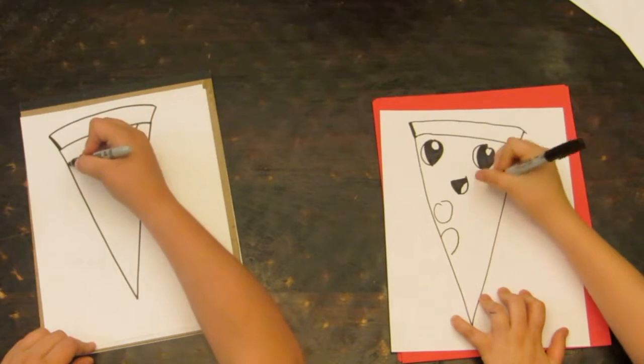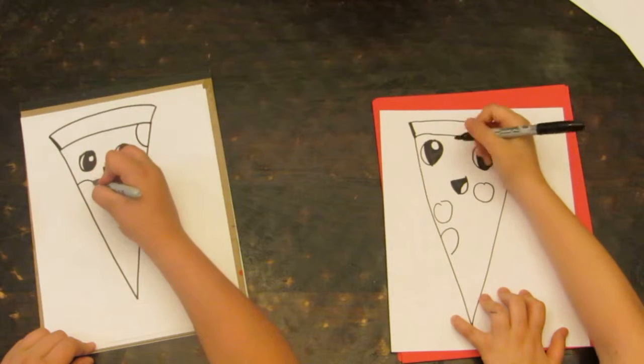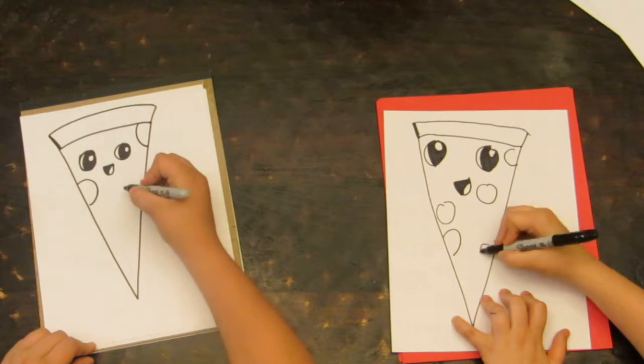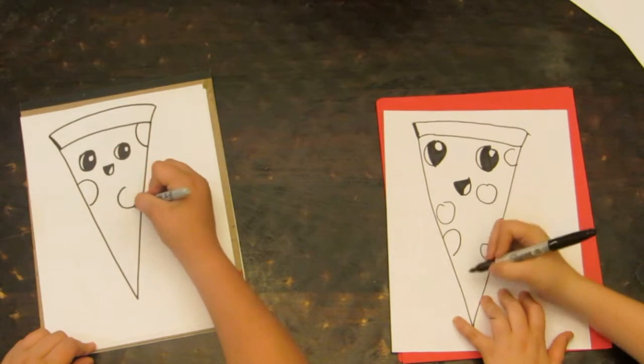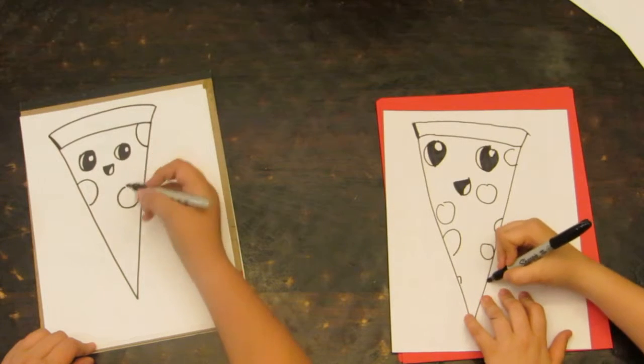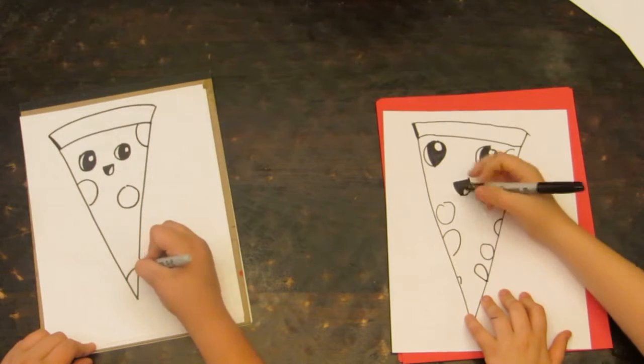So we're just going to draw little spots. They don't have to be full. They can be half. Yeah, they can be half, they can be half to the side.